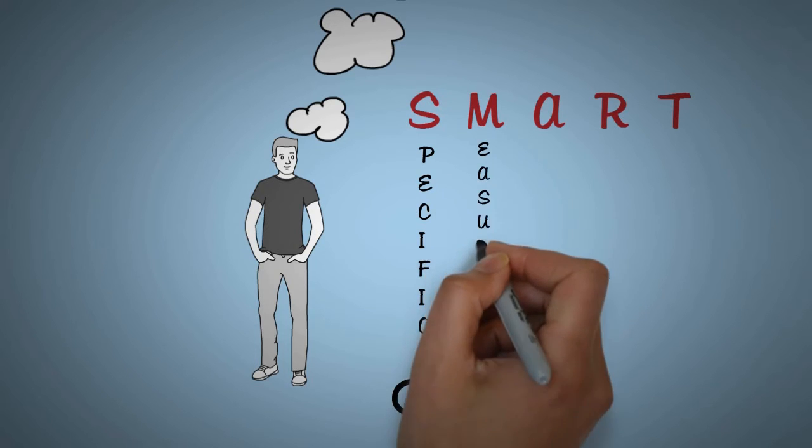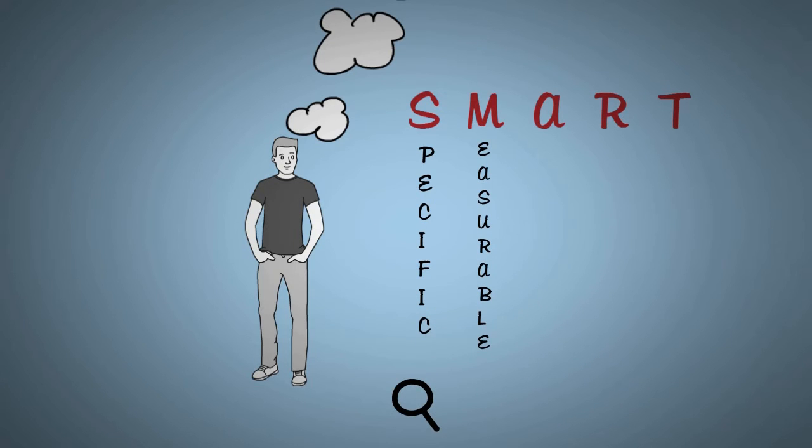M stands for measurable, meaning you can measure it. When you can measure it, you can track progress. For example, how many kilograms you want to lose.